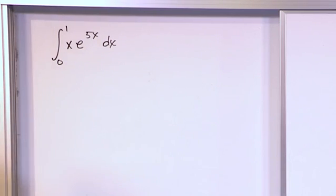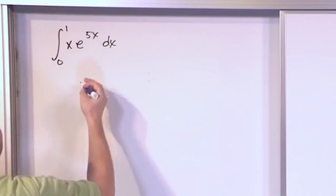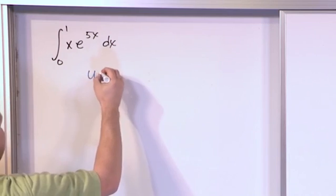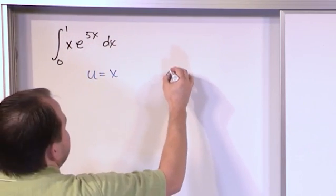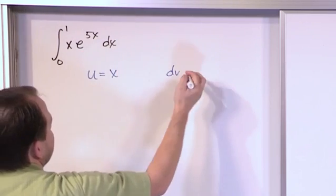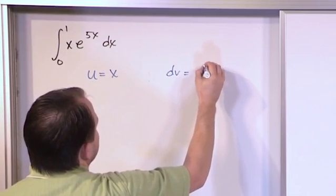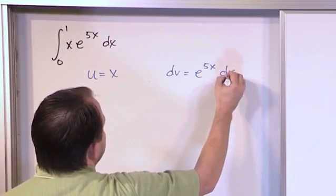So we need to define some u. In general when you see something like this you want to have u equal to whatever is destructible and you want to have dv equal to everything else. So e to the 5x dx like this.